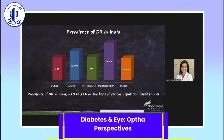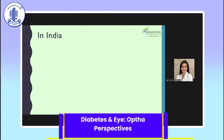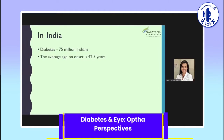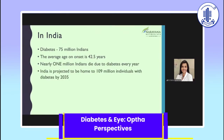We don't have very good studies, but now that Dr. Praveen has done a study, these numbers will be very important. The prevalence of DR in India is anywhere between 20 to 28% based on available studies. We have close to 75 million Indians living with the disease, and the age of onset gets younger and younger — currently at 42.5 years. Patients have even been seen in their second and third decade. Nearly 1 million Indians die due to diabetes every year, and India is projected to be home to 109 million diabetics by 2035.